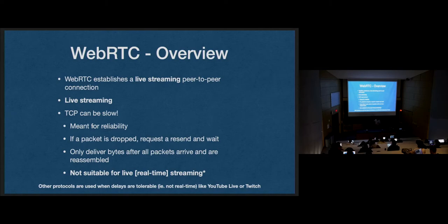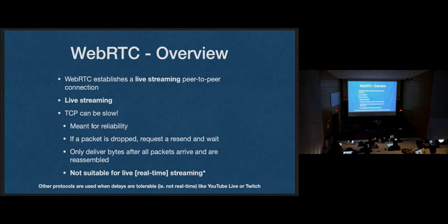TCP is meant for reliability. It's made to ensure that you get every byte of information that was sent to you. But it can be slow. If you drop a packet — and the internet drops packets all the time — TCP is going to sit there and wait, request a resend, get the packet back, reassemble all the data, and then make that data available to read using a receive method on the TCP stream. You can't get any of that information until you get all of it.